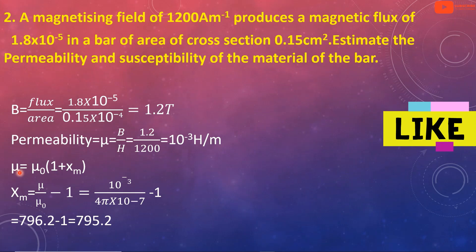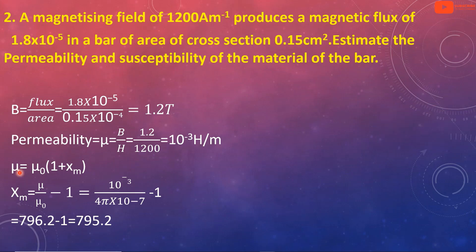For susceptibility, we use the relationship: mu_r equals 1 plus chi, and mu equals mu_0 into (1 plus chi). Therefore chi equals mu divided by mu_0 minus 1, which equals 10⁻³ divided by (4π×10⁻⁷) minus 1, equal to 796.2 minus 1, giving susceptibility chi equal to 795.21.